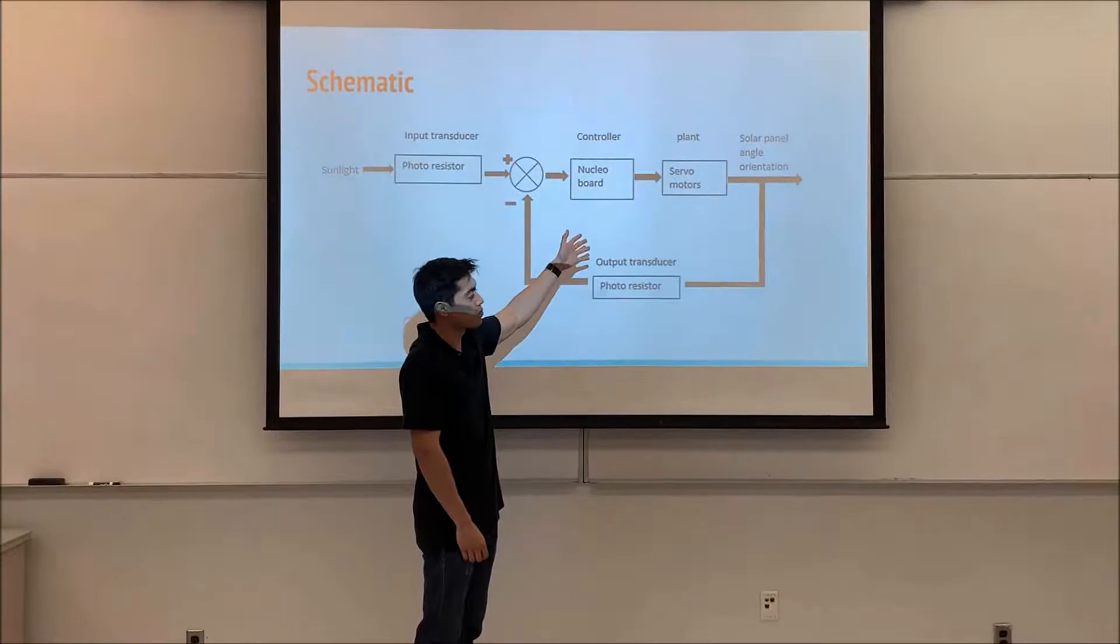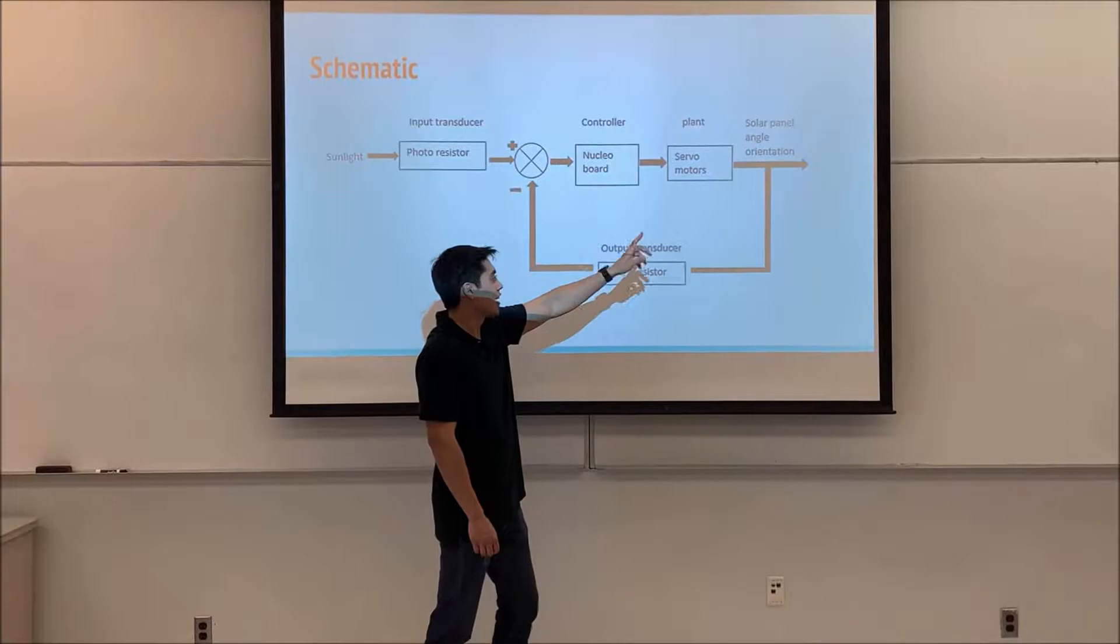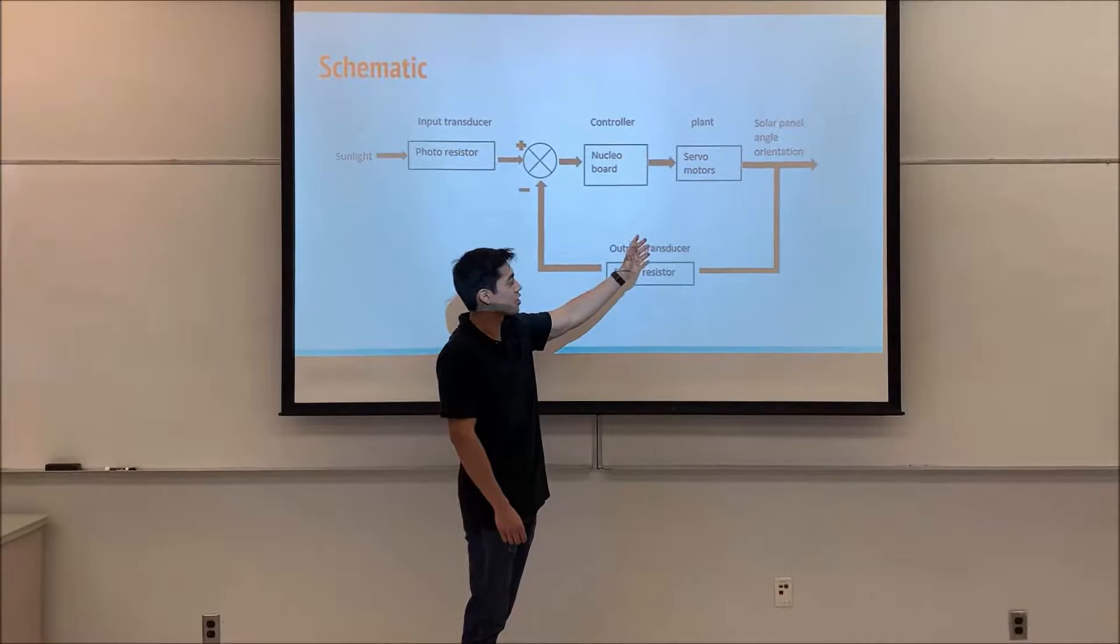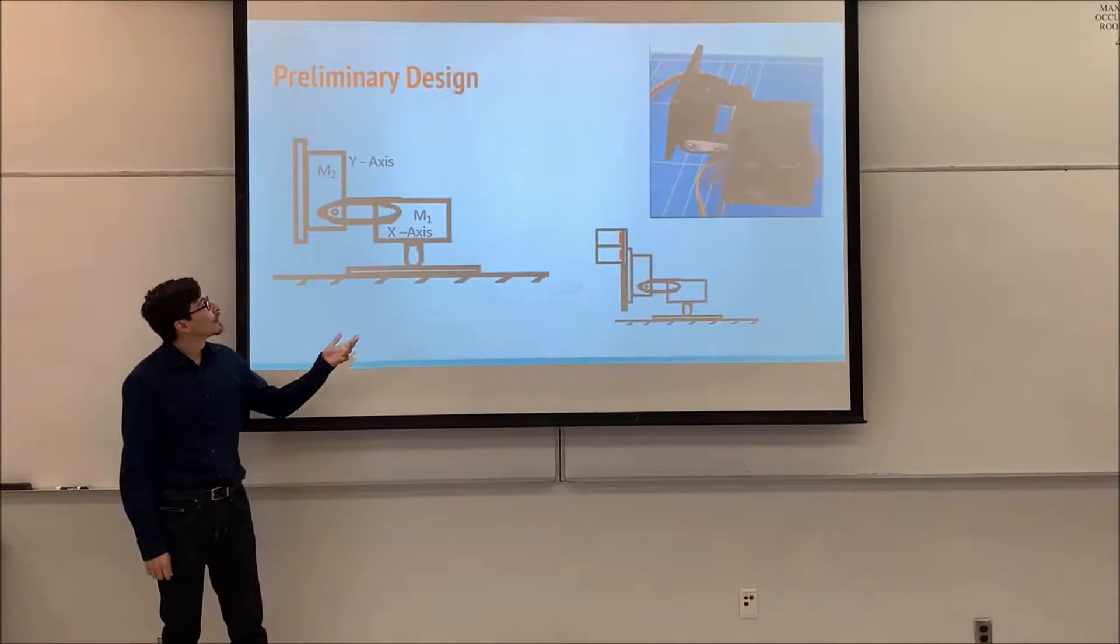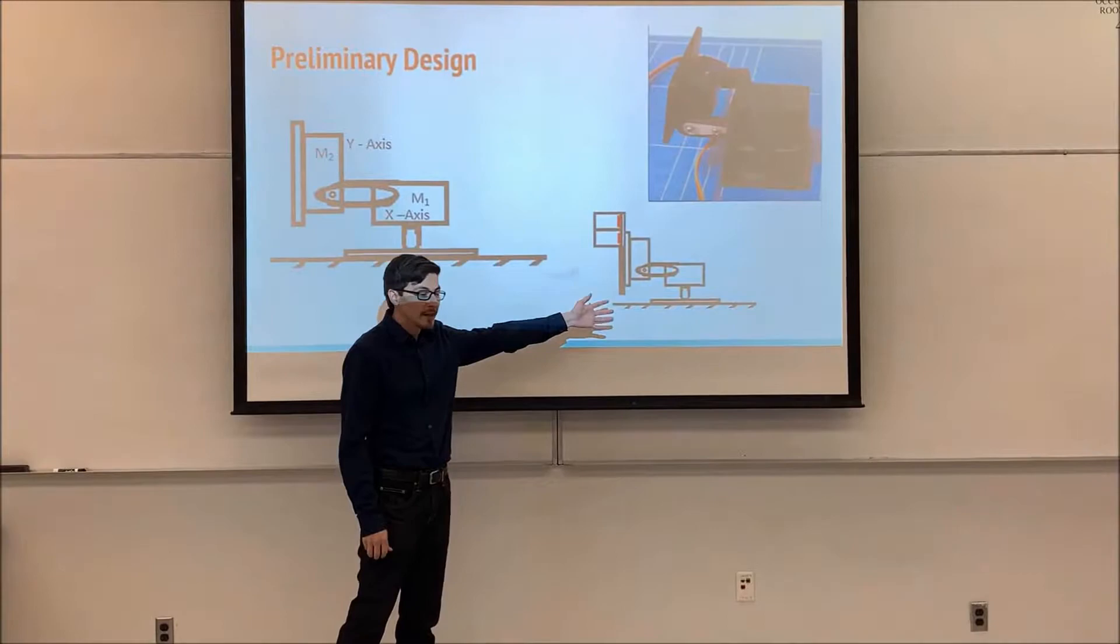At the nucleo board, it's going to tell the motors what direction to move to angle the solar panel at a certain way to get the most sunlight. And then we're going to have that information feed back into the photoresistors in order to correct the angle more. And then have it feed back into the system to make sure the solar panel is always getting the most efficient amount of sunlight possible.